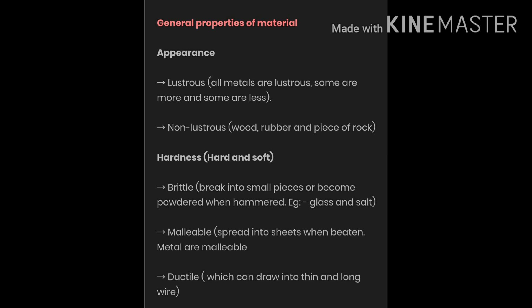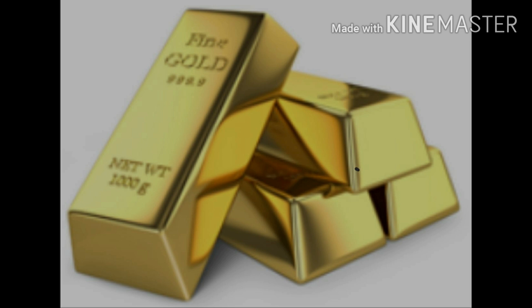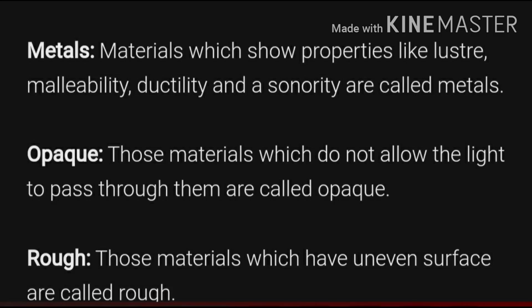Appearance refers to how an object looks in terms of shape, size, and color. Paper looks different from cloth, and wood looks different from iron; iron looks different from copper and aluminum, yet there are certain similarities. A gold bar is very shiny and hard — this shiny property of gold is used to make ornaments and jewelry. Metals are lustrous, malleable (they can be beaten into sheets), and ductile (they can be drawn into wire).